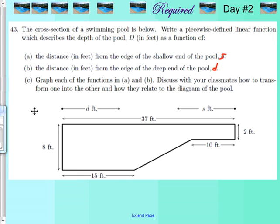For today we are doing lesson 5.1, this is technically day two. Yesterday was the easy part where we just had two points and found the equation of the line — find the slope between two points. Now you actually have to move to precalc level, because frankly that before was just algebra two level.